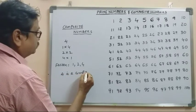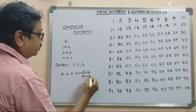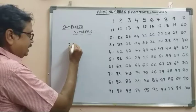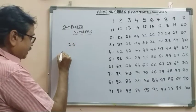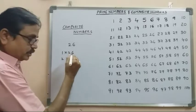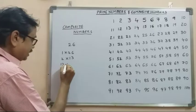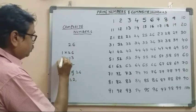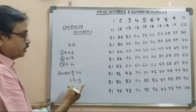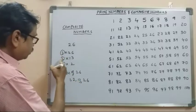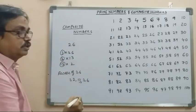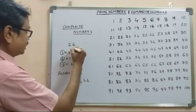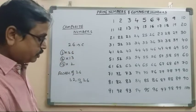For example, 26: the factors of 26 are 1, 2, 13, and 26 — so four factors. Since it has more than two factors, 26 is a composite number.